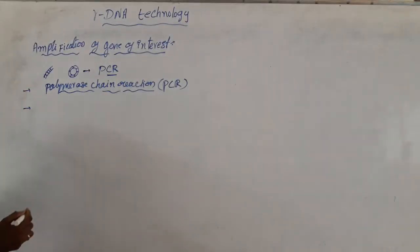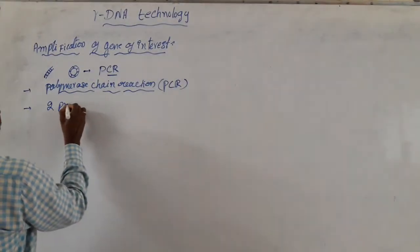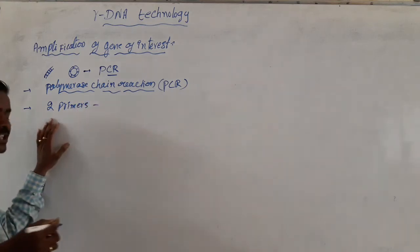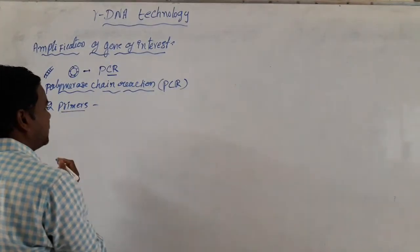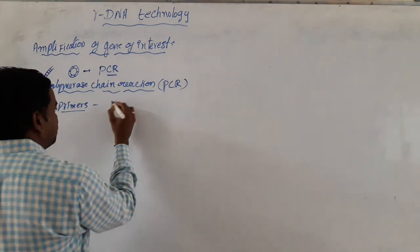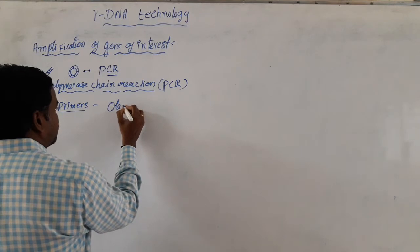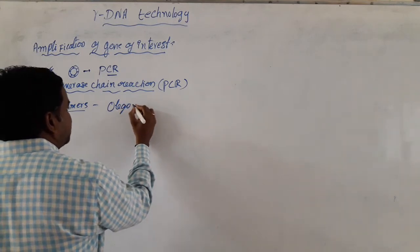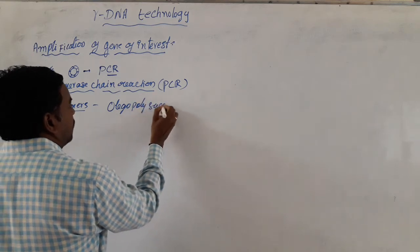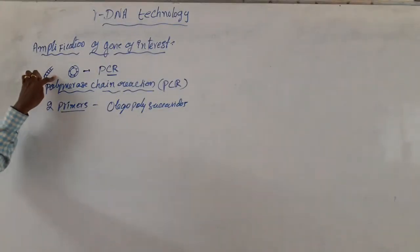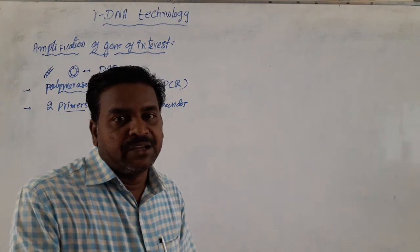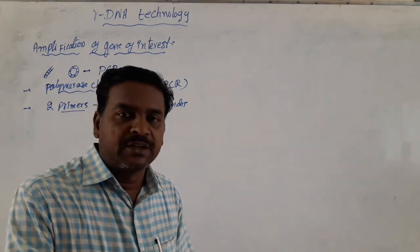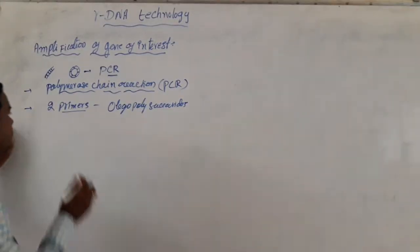This Polymerase Chain Reaction involves two primers. These two primers are artificially synthesized chemically using oligonucleotides, and these two primers are complementary with the gene of interest.